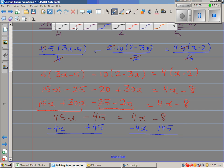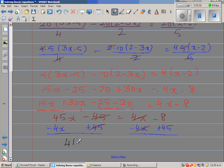These are two sides of an equation. Plus 45 minus 45 gets canceled on the left. 45x minus 4x is 41x. On the right, minus 8 plus 45 equals 37. So 41x equals 37.